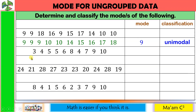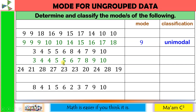Example 2 for mode: arranging in ascending order gives 3, 4, 4, 5, 5, 6, 7, 8, 9, 10. Both 4 and 5 appear twice, while all other numbers appear only once. Since both 4 and 5 appear the most (tied), they are both modes. Since there are 2 modes, this distribution is bimodal.